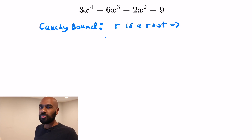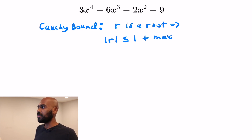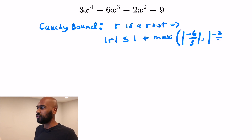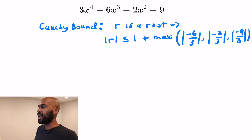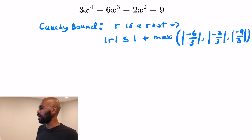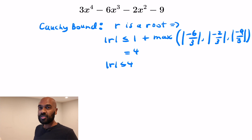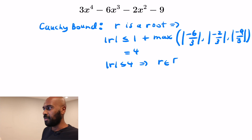then the Cauchy bound states that the absolute value of r is less than or equal to 1 plus the maximum of a bunch of different values — ratios of the coefficients. It's the absolute value of all the coefficients after the leading coefficient divided by the leading coefficient itself. So we see we have negative 6 over 3, negative 2 over 3, and negative 9 over 3, all in absolute value. The values are 2, 1, and 3, so the maximum is 3 and we get a total of 4. Therefore the absolute value of any real root is at most 4, meaning the real root is between negative 4 and 4.